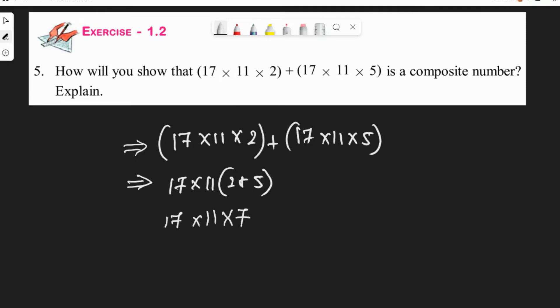Like the previous sum, we know that FTA is the Fundamental Theorem of Arithmetic. A composite number can be expressed as a product of primes, or we can say that the product of primes is always a composite number. We have 17, 11, and 7, which are prime numbers, and therefore...